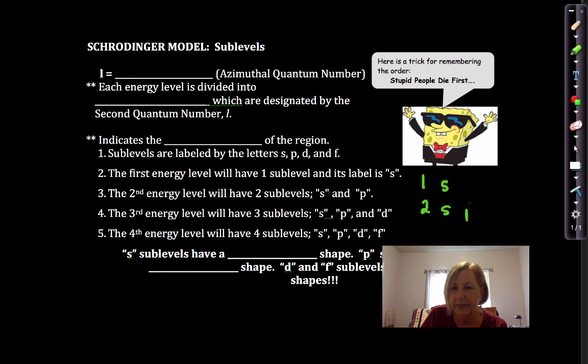N equals 2 has S and P, N equals 3 has S and P and D, N equals 4 is S and P and D and F. After that, it starts following the alphabet, G, H, and so forth. And these would all have to represent excited states. As of today, we've not discovered any elements that would have a ground state in G or H sub-levels.